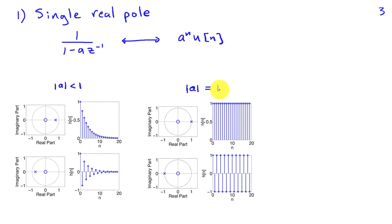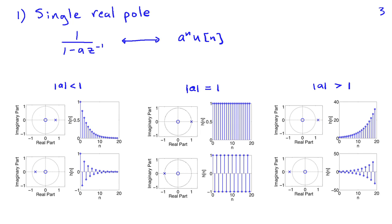If the pole is on the real axis at z equals 1, I get a step function for my impulse response. If the pole is at z equals -1, the impulse response oscillates every other sample (1, -1, 1, -1,...). If the magnitude of a is greater than 1, the pole is outside the unit circle and the system is not stable — the impulse response grows exponentially. With the pole on the positive real axis outside the circle we get a growing exponential; on the negative real axis we get a growing response with alternating sign.